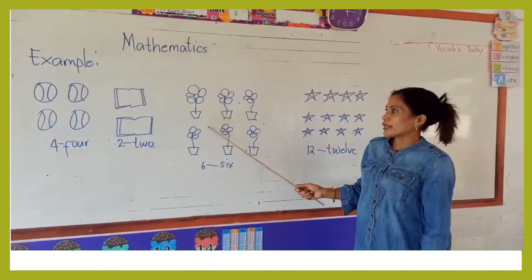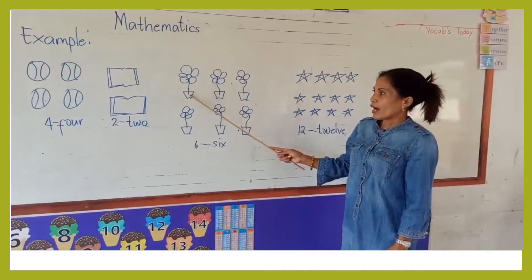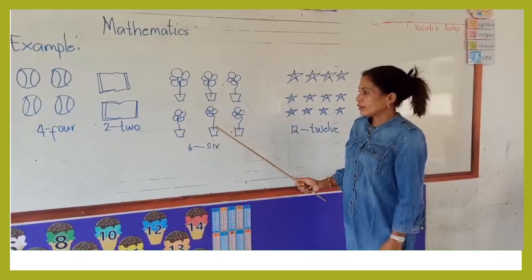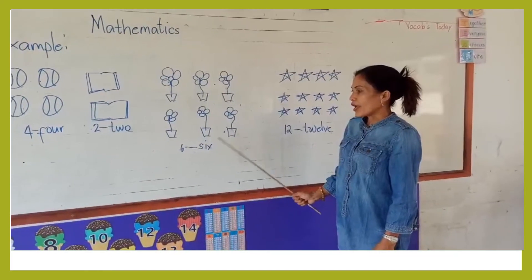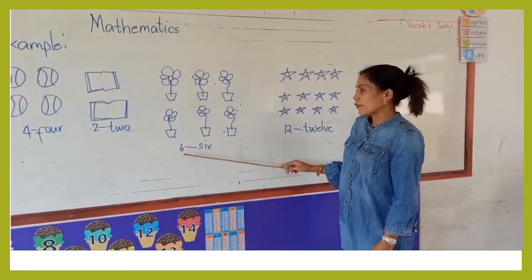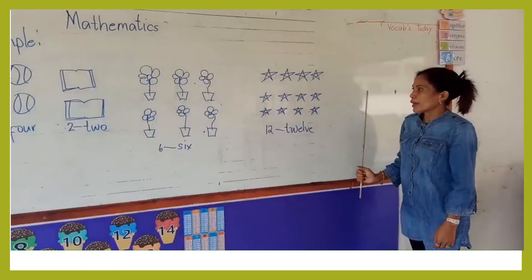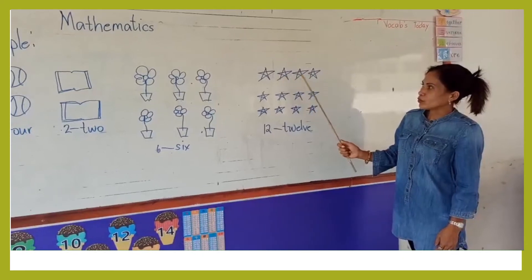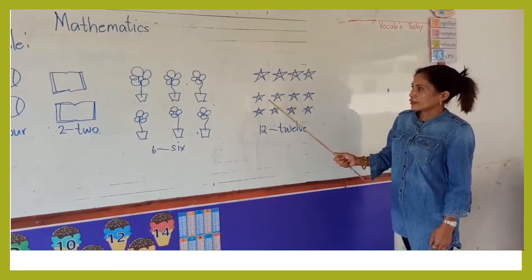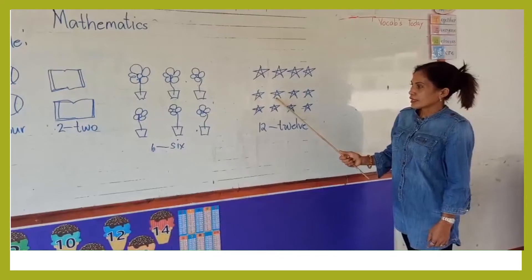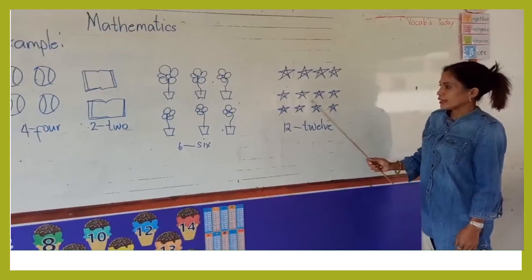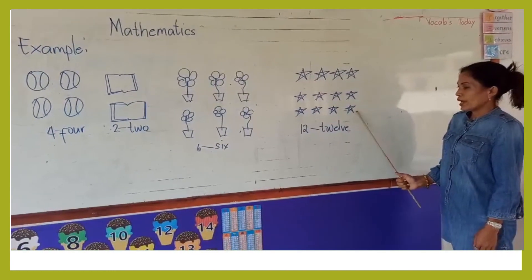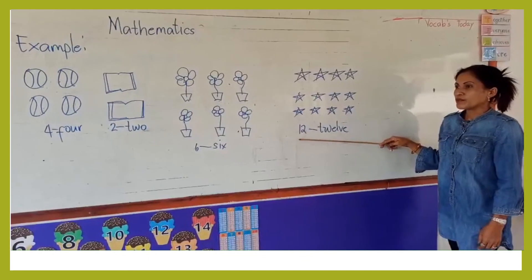How many flowers are there? One, two, three, four, five, six. There are six... seven, eight, nine, ten, eleven, twelve. There are twelve stars.